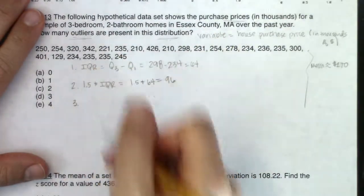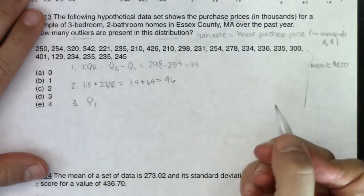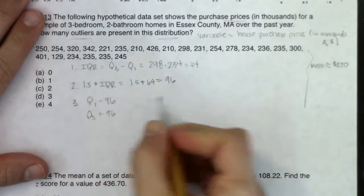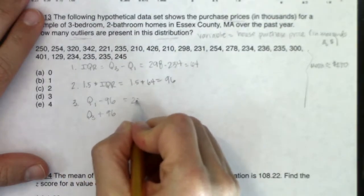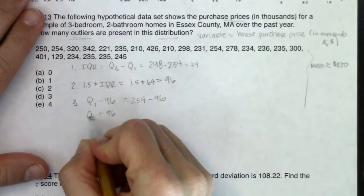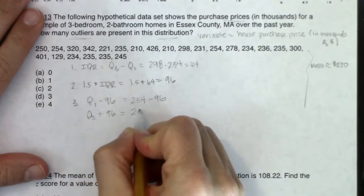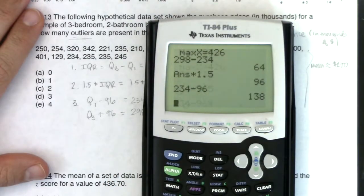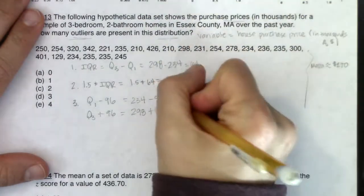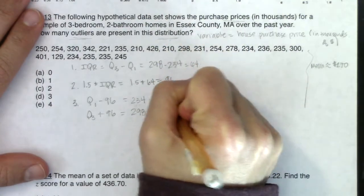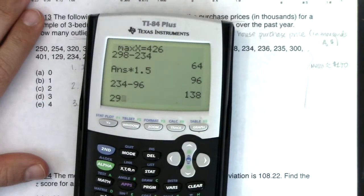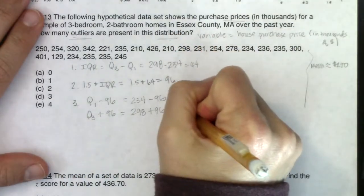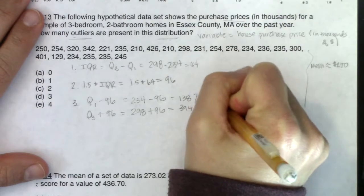All right, I'm going to multiply that number by 1.5 and that is going to give me 96. All right, so here's the fun. Here's where we got to build the safety zone. So I'm going to lower the Q1 threshold through subtraction, but I'm going to raise the Q3 threshold with addition. So Q1 in this case was 234, so I'm looking at 234 minus 96. Q3 was 298, so I'm looking at 298 plus 96.